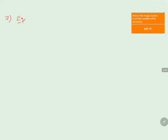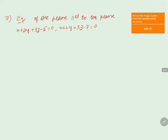Find the equation of the plane parallel to the planes x + 2y + 3z - 5 = 0 and x + 2y + 3z - 7 = 0, and equidistant from them.